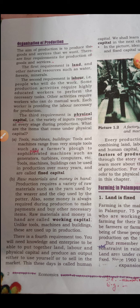The third requirement is physical capital. Physical capital is divided into two parts: fixed capital and working capital. Fixed capital includes tools, machines, and buildings — from simple tools such as a farmer's plow to heavy machines such as generators, computers, etc., which can be used in production for many years.